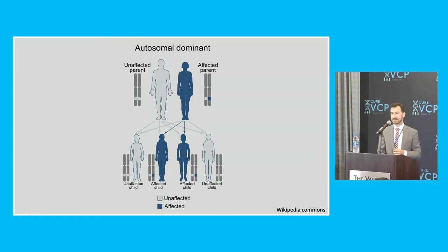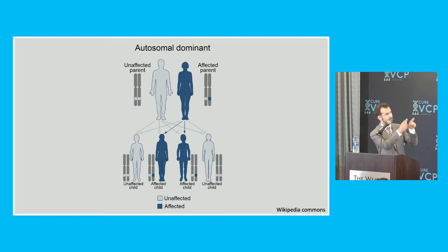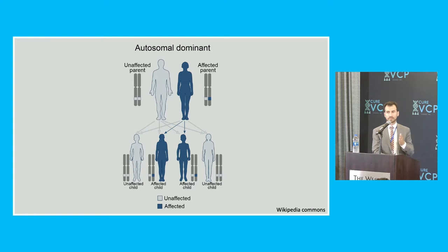Another way of presenting this is in the following figure, which is very nice because it shows you that 50% risk we were talking about, and also shows you a little bit about why. Right next to each parent there you have two little gray bars representing the chromosomes. We each have two copies of each gene in the body, such as VCP. You only need one copy of the disease mutation to get the condition. Therefore, to your children you can pass on either the healthy copy or the copy that has the disease mutation, giving you that 50-50 risk.